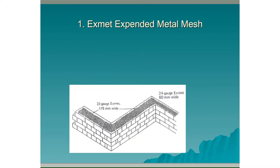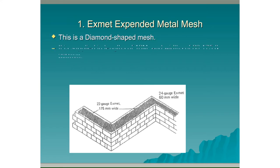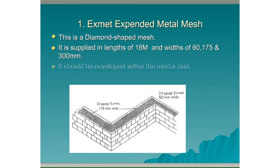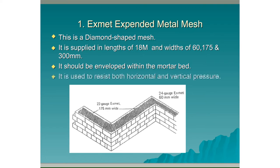X-Men Expanded Metal Mesh: This is a diamond shaped mesh. It is supplied in lengths of 18m and widths of 60, 175 and 300mm. It should be enveloped within the mortar bed. It is used to resist both horizontal and vertical pressure.